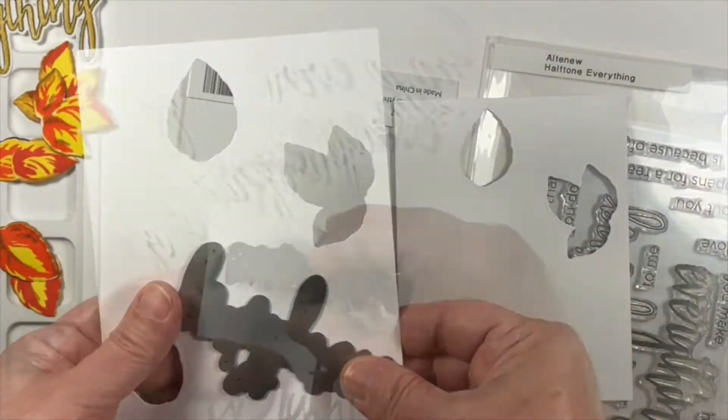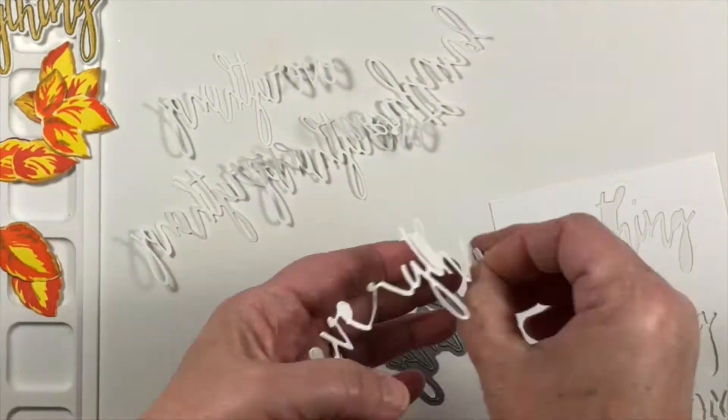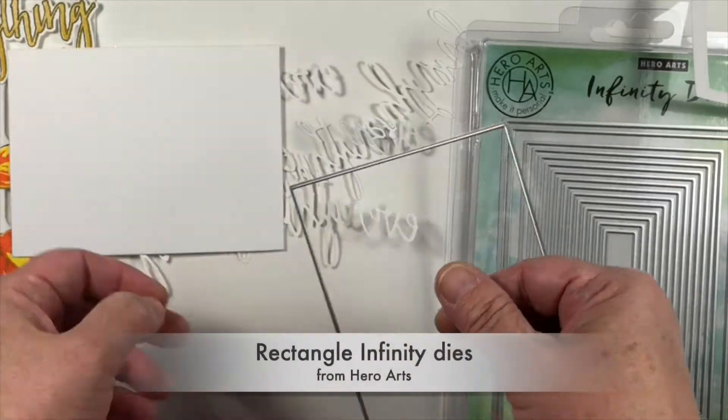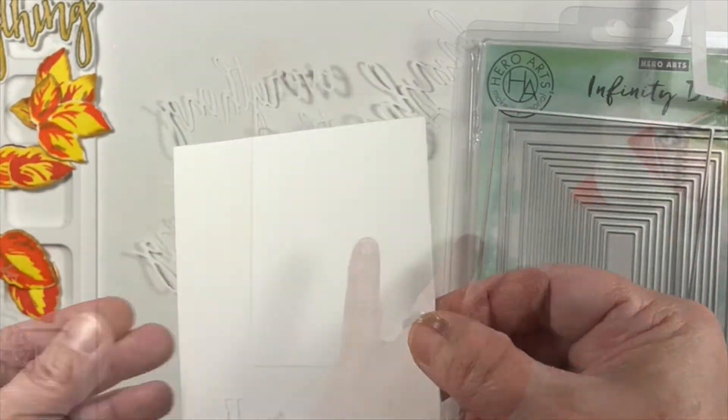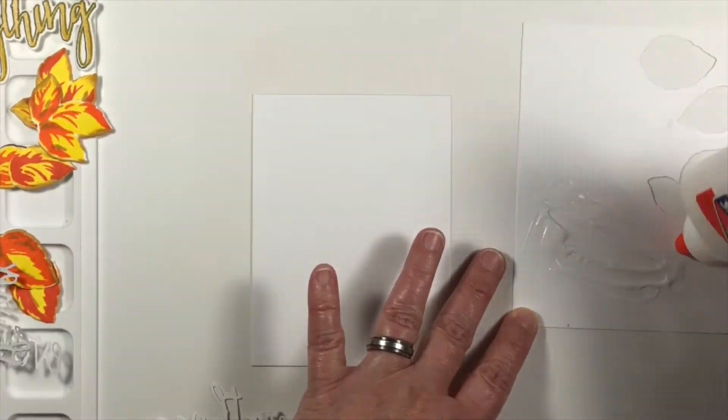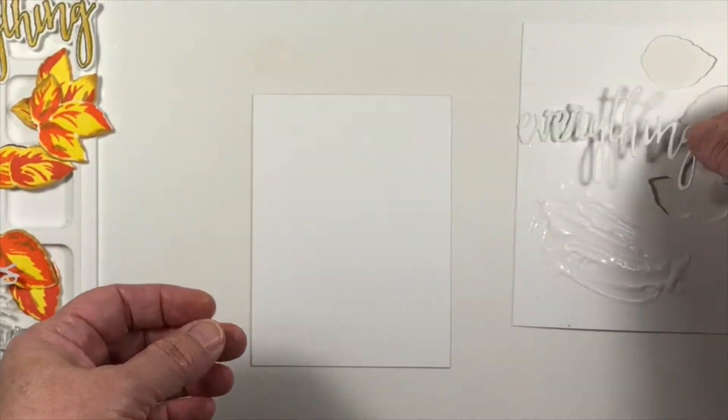Now I'm going to use some of those empty areas and make five die cuts of the word everything. In that set of halftone everything, there was a way to take the scripty part or the outline that you can die cut.